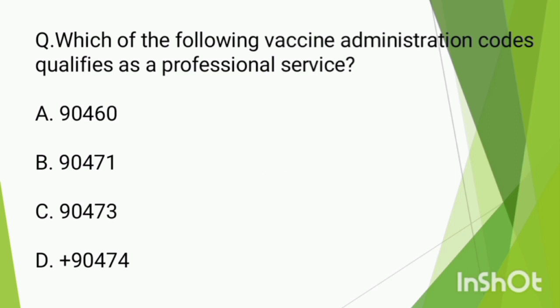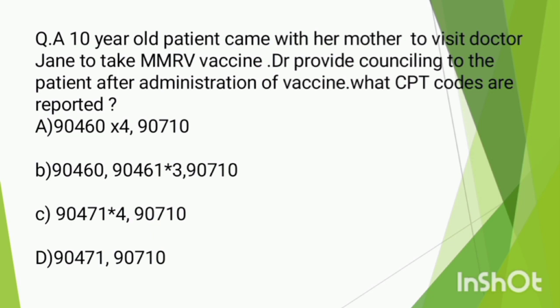Code 90460 is for immunization administration through 18 years of age, by any route of administration, with counseling by a physician or other qualified healthcare professional — for the first or only component of each vaccine or toxoid administered. Code 90461 is for each additional vaccine or toxoid component administered, listed separately in addition to the code for the primary procedure.